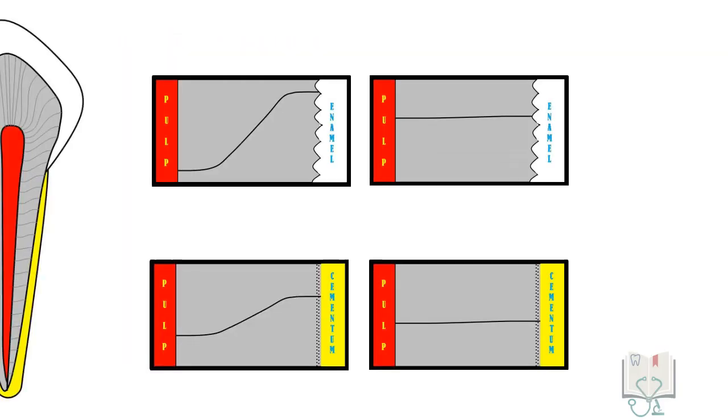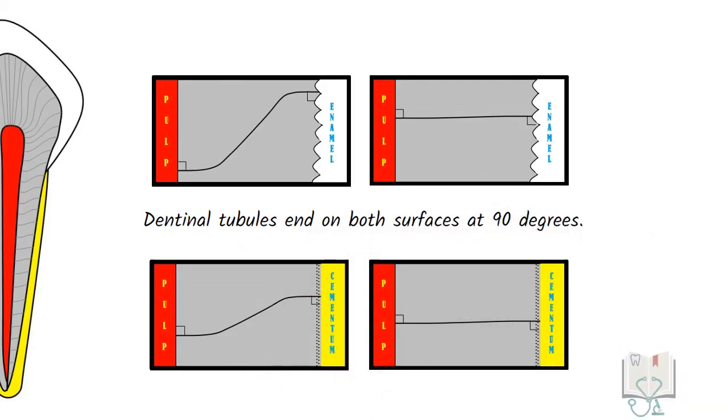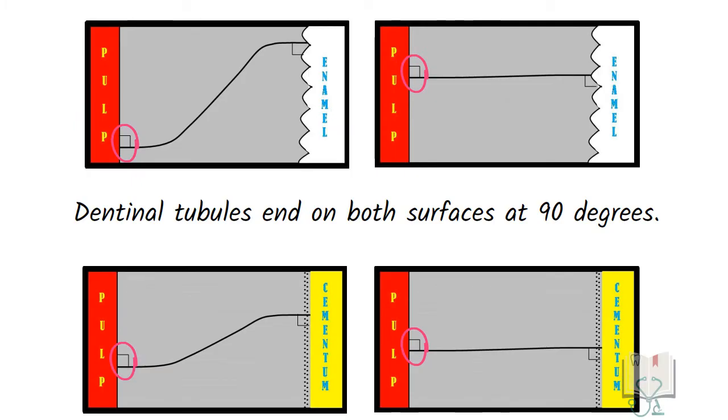All dentineal tubules in any part of the dentine end on both surfaces at 90 degrees, be it in the pulpal end or the outer ends at dentino enamel junction or cemento enamel junction.